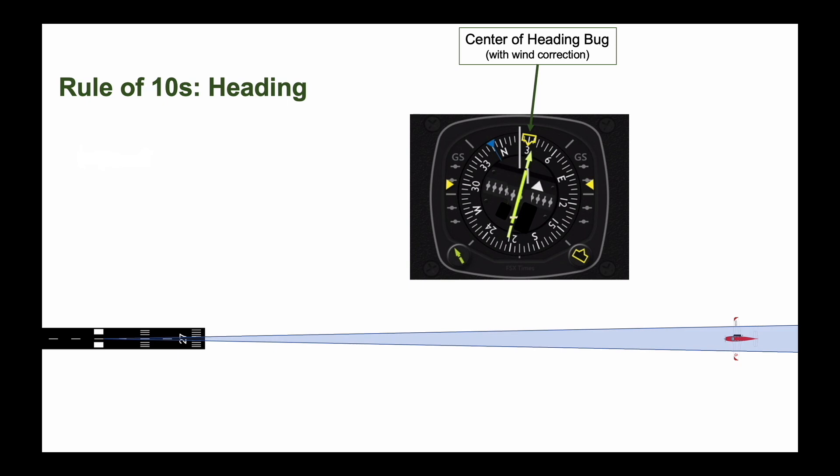There is a similar rule of 10s for precision on aircraft heading. You may have noticed that the heading bug on most HSIs and heading indicators has a center point, a left edge that indicates 5 degrees left of the center of the bug, and a right edge that is 5 degrees to the right. The heading bug then describes a 10 degree wide range of headings.